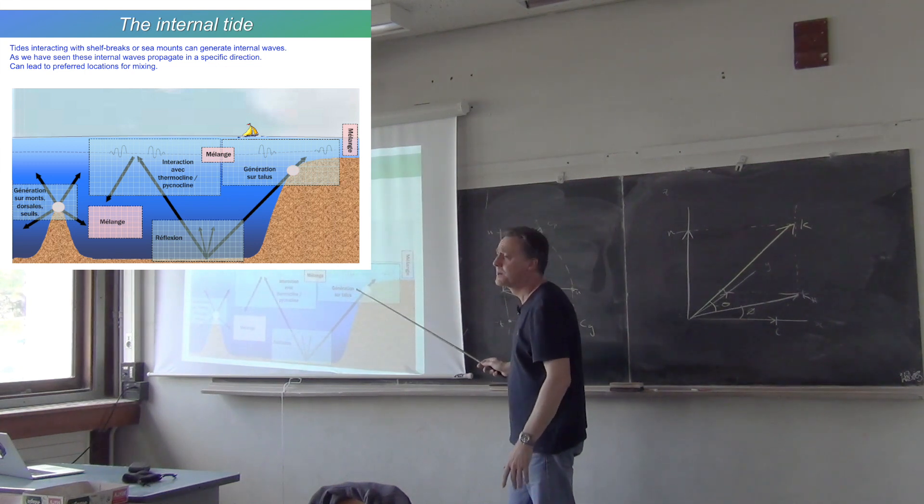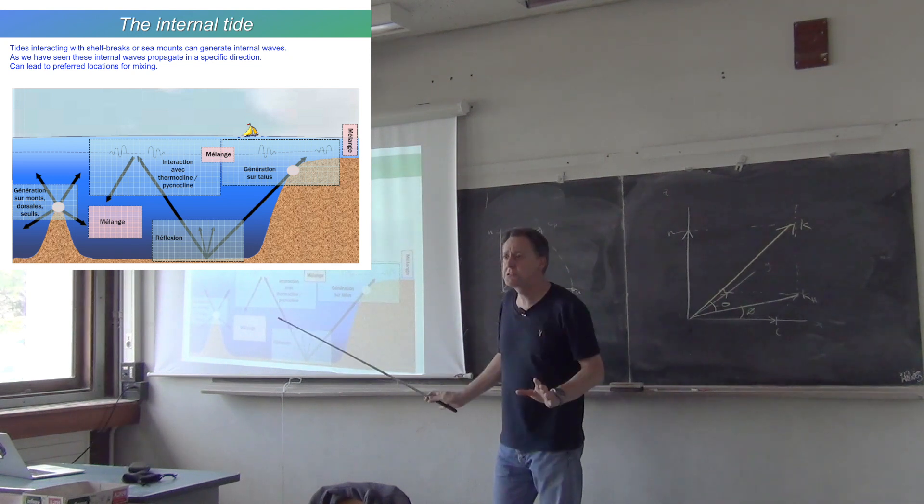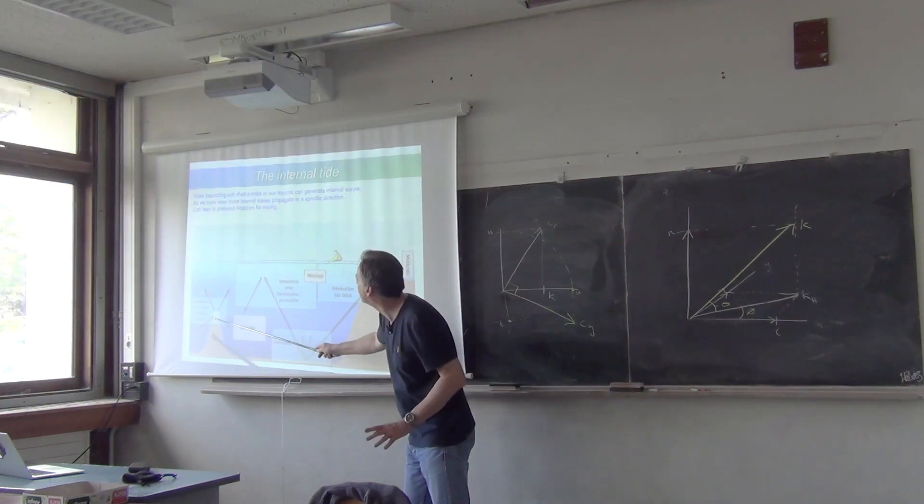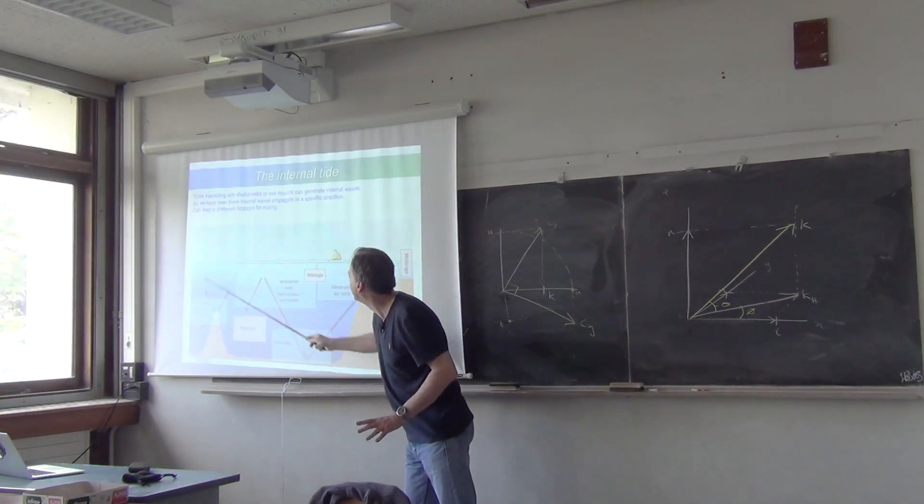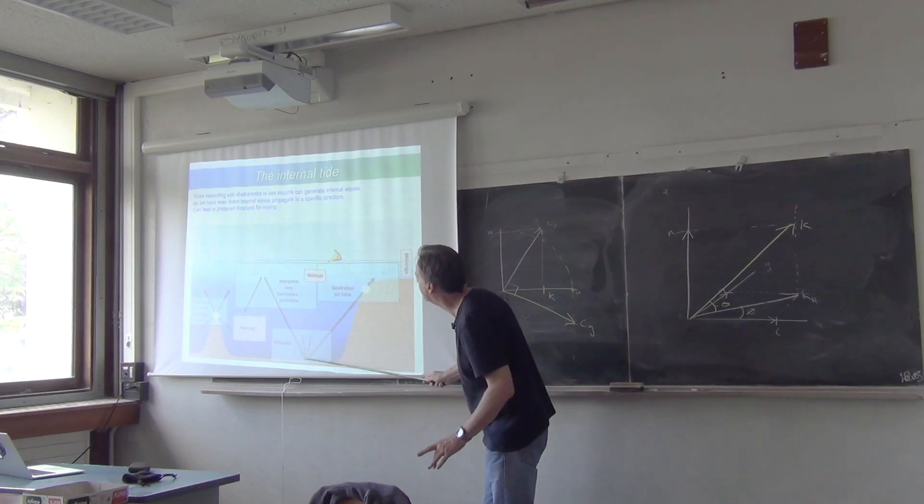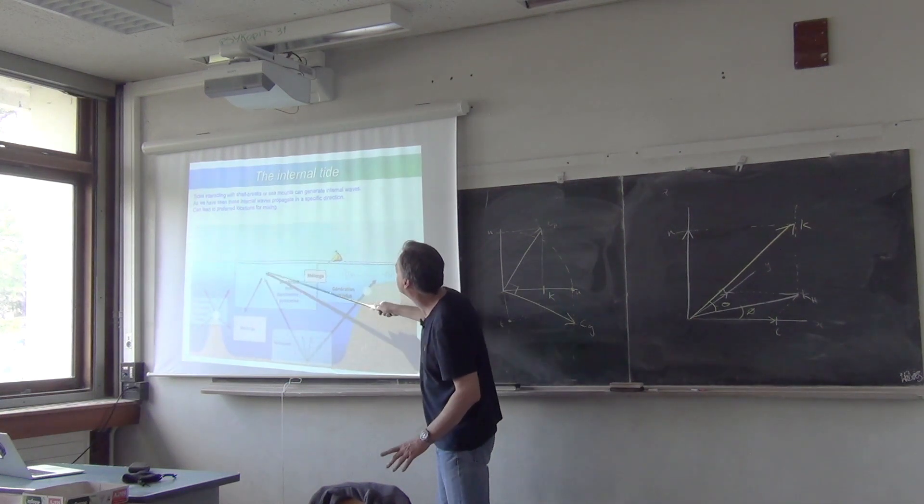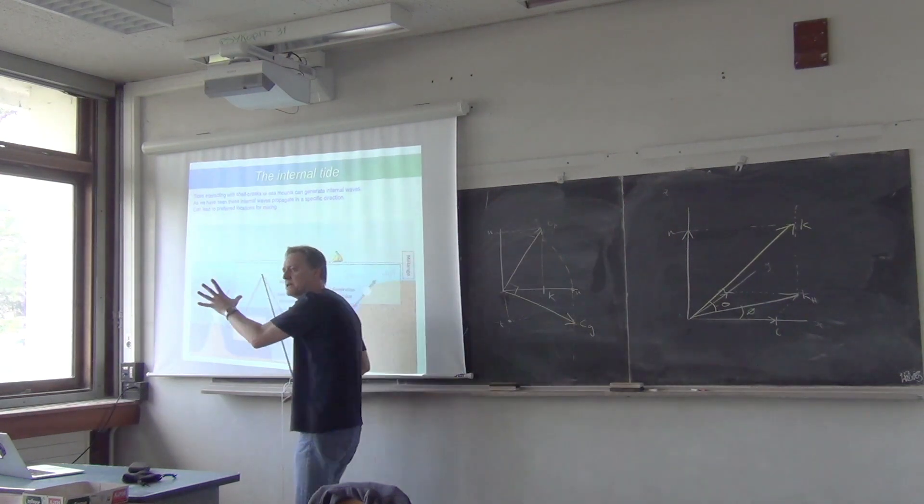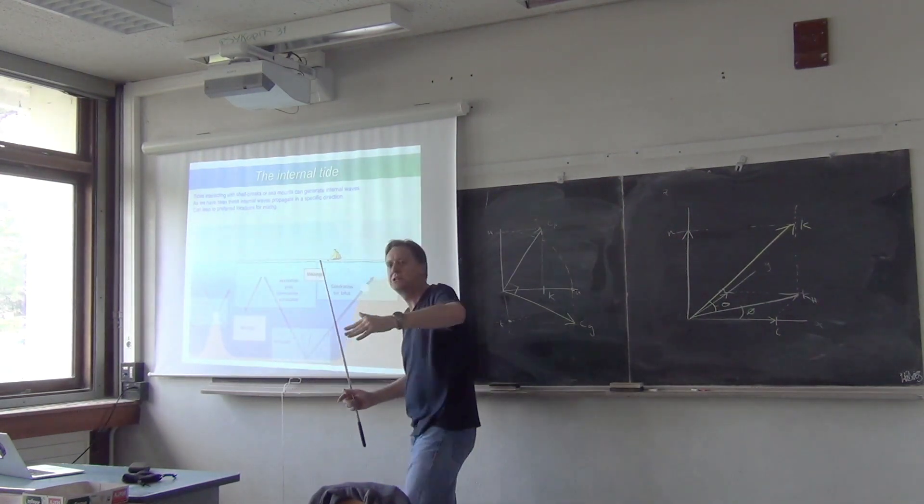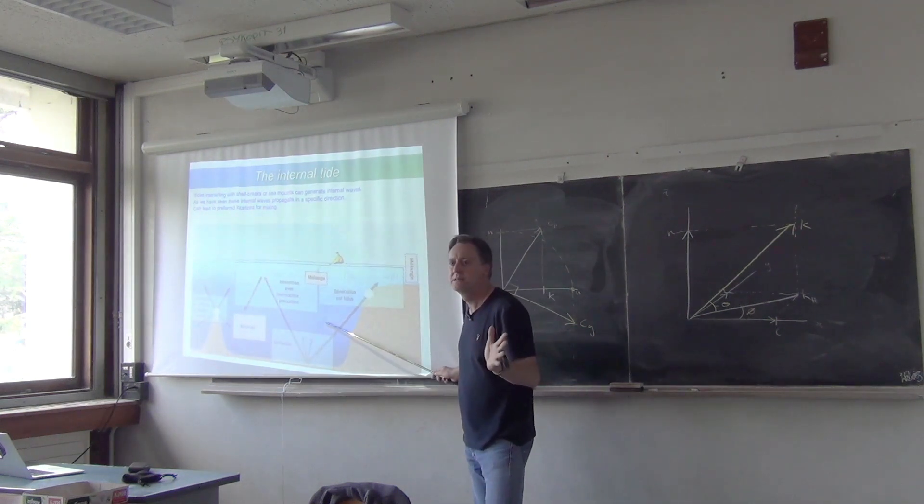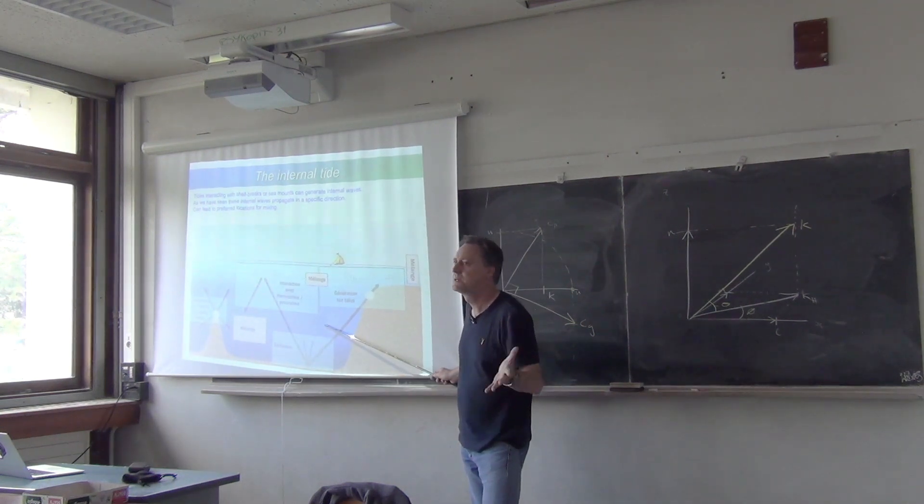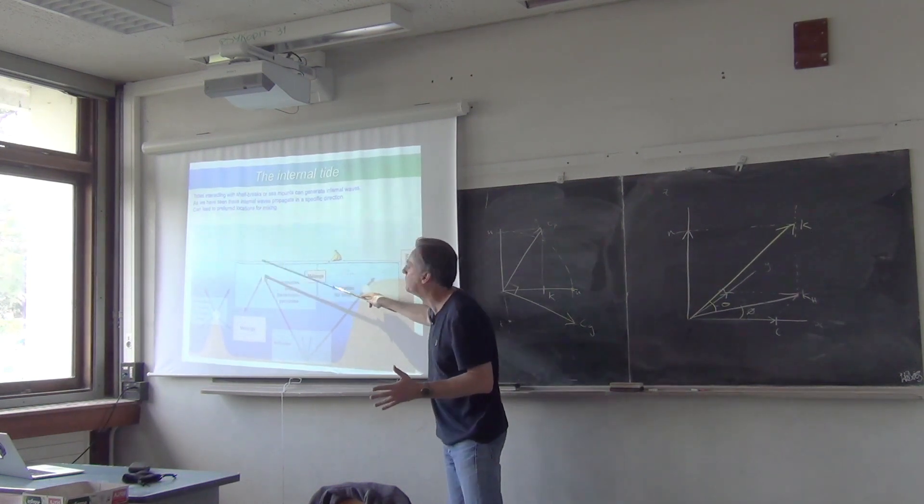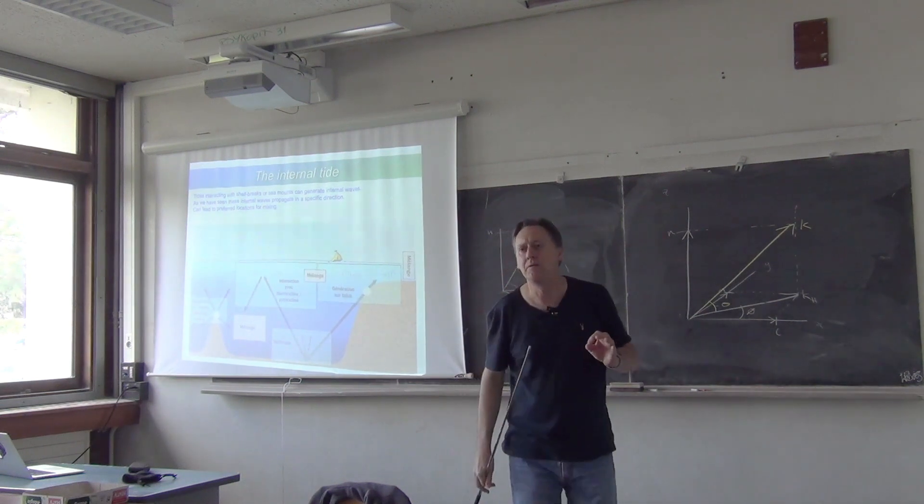Because you know the frequency and the stratification, you know the angle of the wave phase propagation. From here you can have things going up in a very specific direction. It's going up this way, it'll go down this way, it can reflect off the bottom, it can reflect off the surface or off the thermocline. You have these paths mapped out in the ocean for the passage of these tide-generated internal waves, which are called internal tides. There are particular locations here where you're going to see some evidence of these structures.